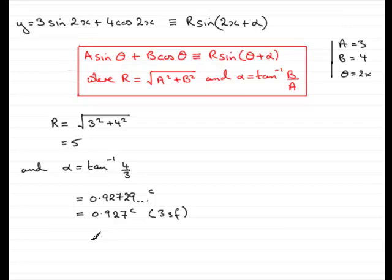And the question was to express y in this format. So let's summarize by saying therefore y equals 5 sine of 2x plus 0.927. And there you have it.